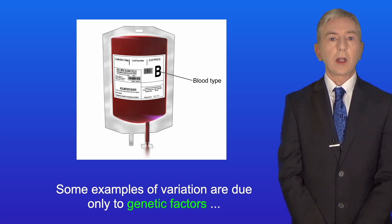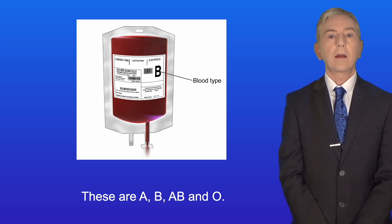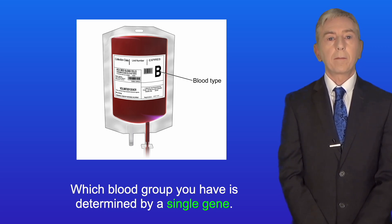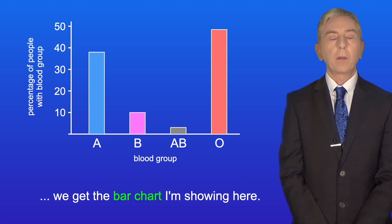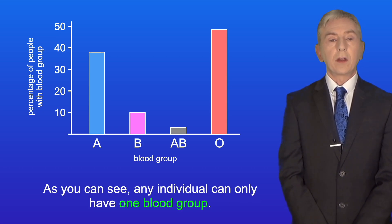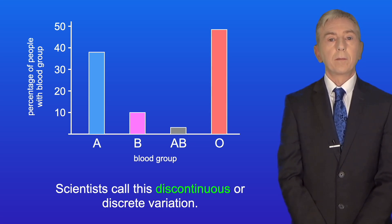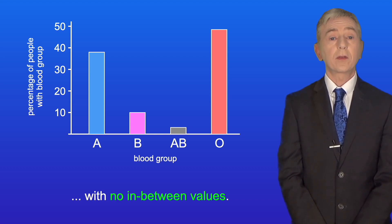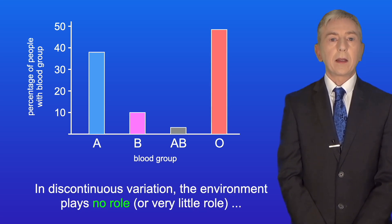Now some examples of variation are due only to genetic factors, with the environment playing no role. A good example is blood group in humans. There are four blood groups in humans: A, B, AB, and O. Which blood group you have is determined by a single gene. If we plot the percentage of people with each blood group, we get a bar chart. As you can see, any individual can only have one blood group and there are no in-between blood groups. Scientists call this discontinuous or discrete variation. In discontinuous variation, a characteristic can only have specific values with no in-between values. Characteristics showing discontinuous variation are controlled by either a single gene or a very small number of genes, and the environment plays no role or very little role.